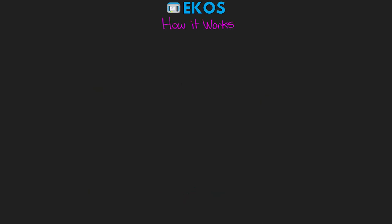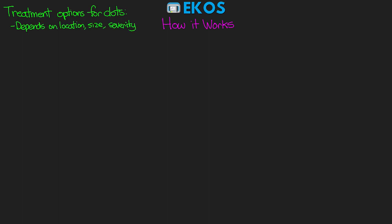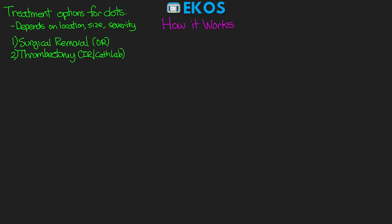To understand how the EKOS works, we must first talk about some of our treatment options for clots. When a patient has a clot such as a PE, there are several different ways we can treat it, depending on the location, the size, and the severity of symptoms. For the sickest patients with the most severe symptoms, we often resort to either surgical removal in the OR or thrombectomy in IR. If either of those is not warranted or is contraindicated, then we turn to medications.